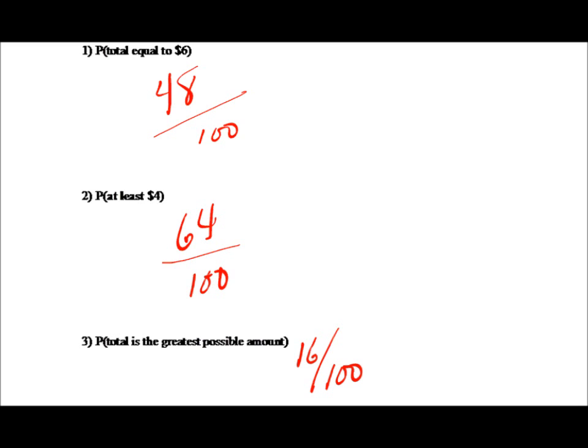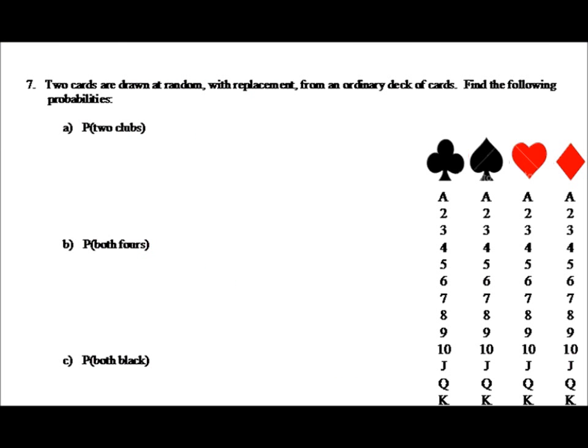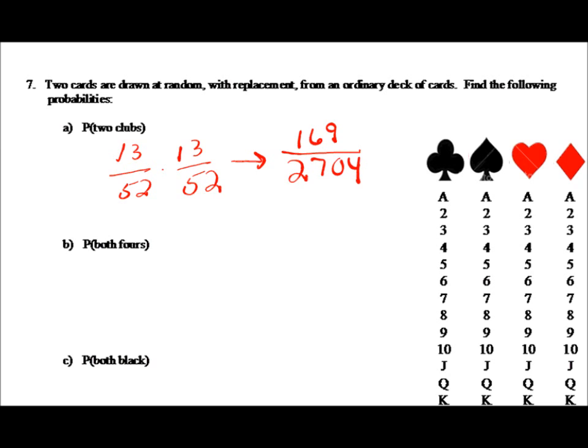Examples seven and eight involve decks of cards and problems with pulling candies from a jar. For example seven: the probability of getting two clubs — the probability of a club on the first draw is thirteen out of fifty-two. Multiplying using the counting principle, the probability of a club and then another club is one hundred sixty-nine out of twenty-seven hundred four — roughly about six and a quarter percent.